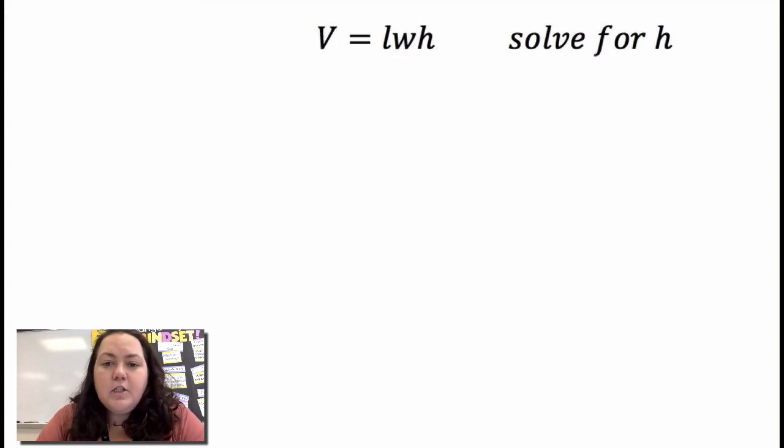They want us to rearrange it to solve for h, so solve for height. I want to get h by itself. It's connected to l and w by multiplication so I'm going to divide both sides by lw. Those cancel and I get v divided by lw equals h.